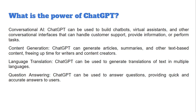Content generation is another aspect. ChatGPT can generate precise, proofread articles, summaries, and other text-based content. The content generated is based on the information it has. We can ask ChatGPT to write a specific story — a sad story, a horror story — or even crack a joke. All of these can be handled by ChatGPT.